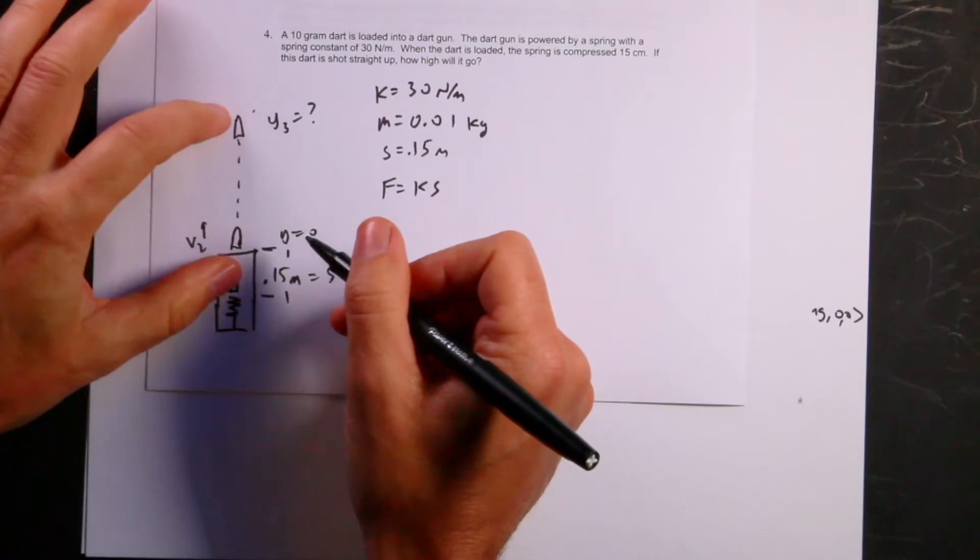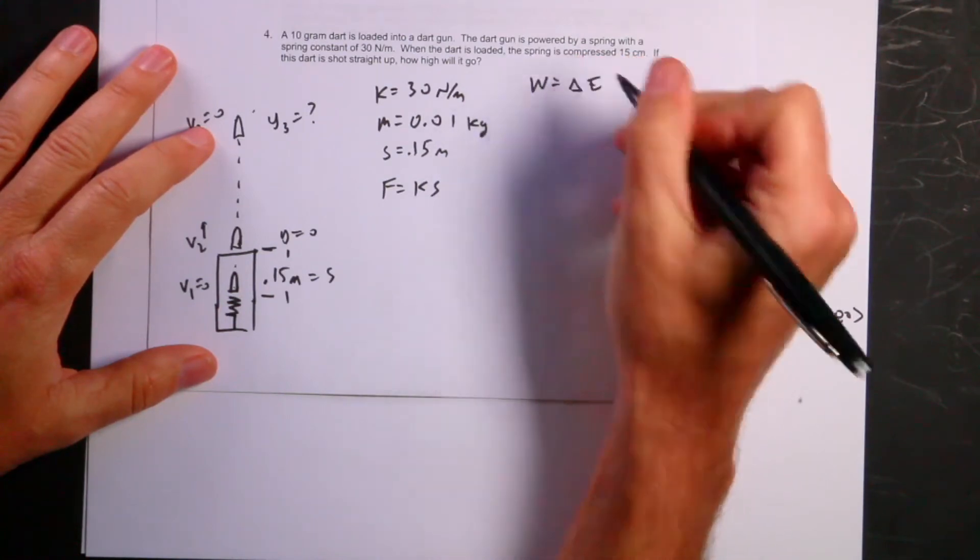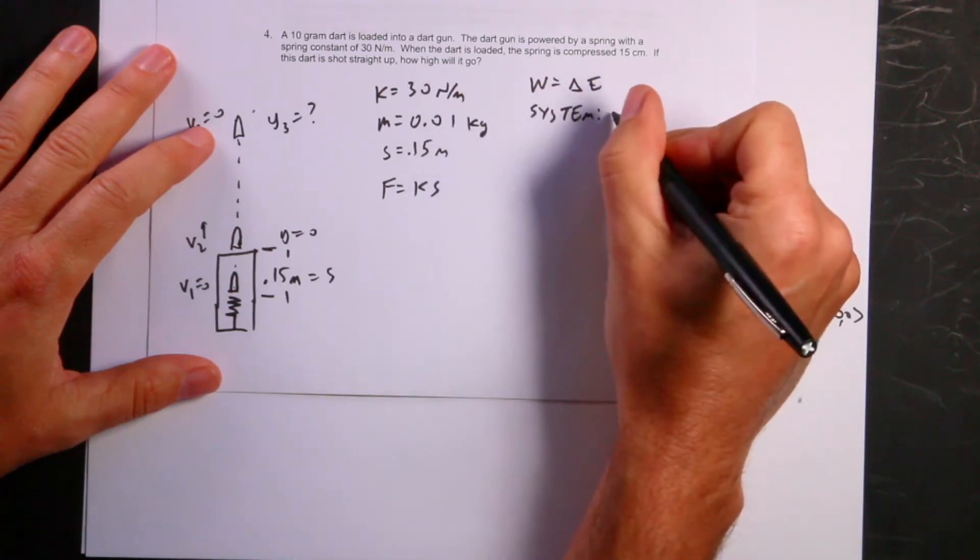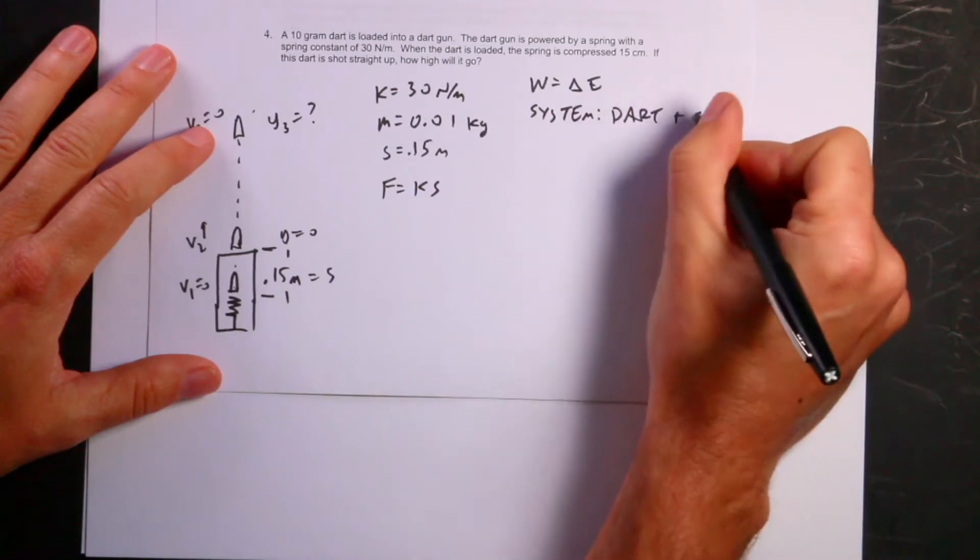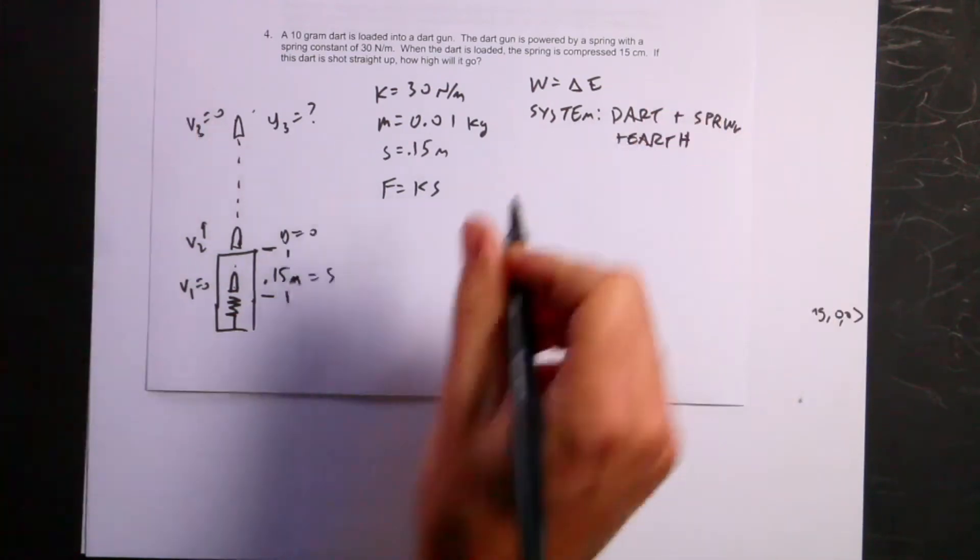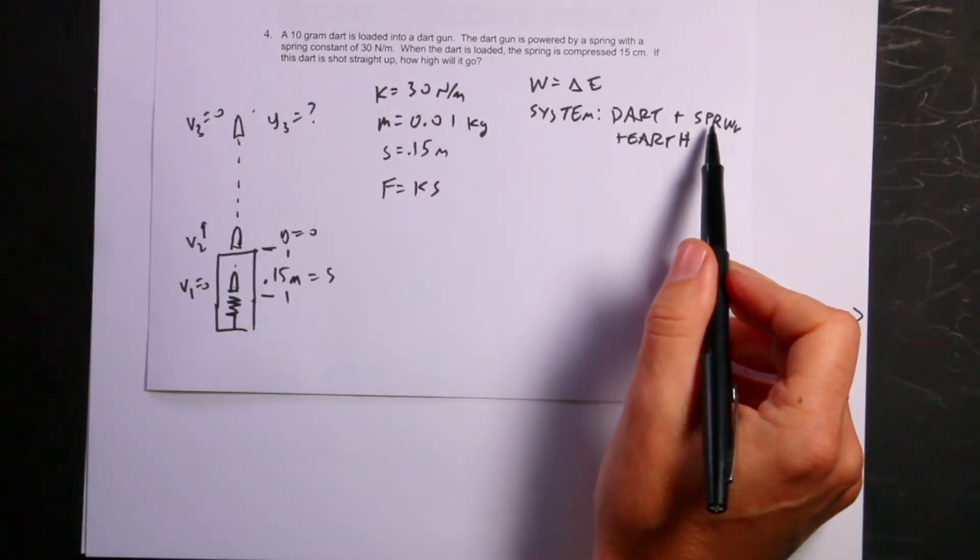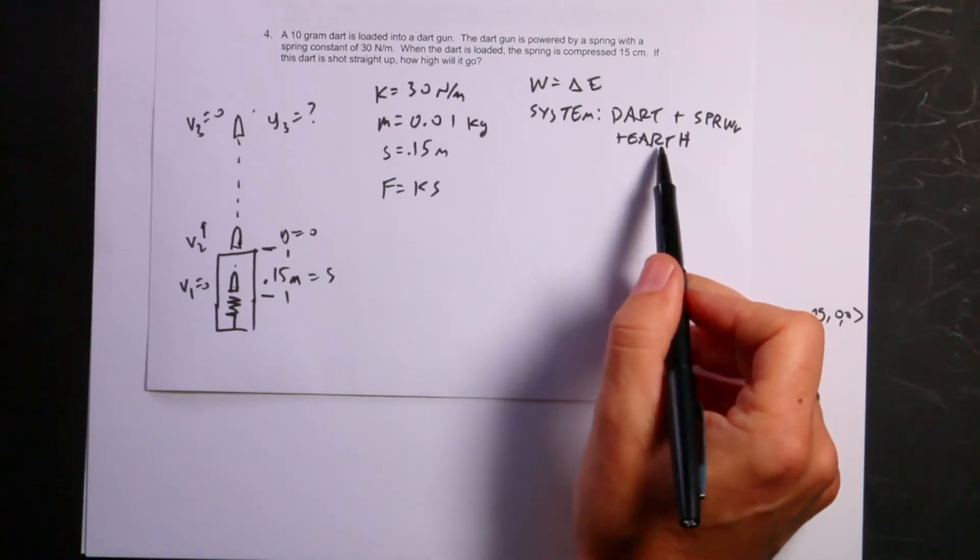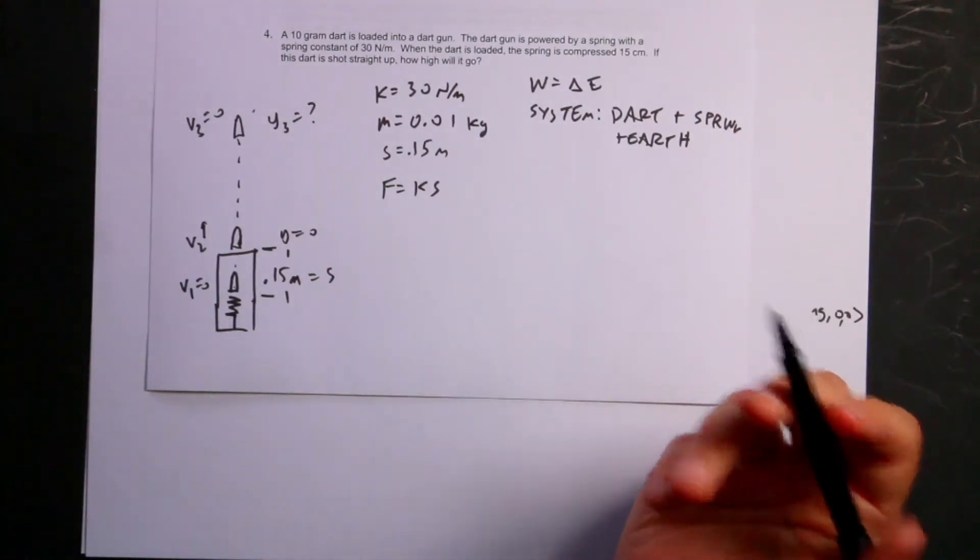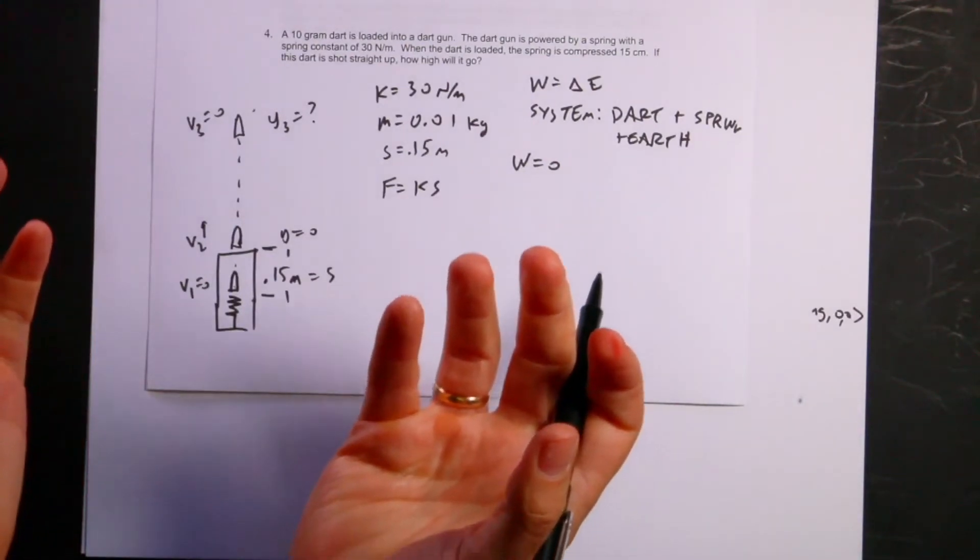But the best way is to not do that at all. Instead, since we don't care about time in the whole situation, we should use the work energy principle. So I'm going to use work as a change in energy. The first thing I need to do is to declare my system. Let's say it's the dart plus spring plus earth.